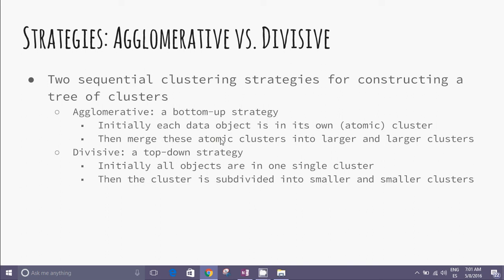Agglomerative is a bottom-up strategy. Initially each data object is in its own atomic cluster, then merge these atomic clusters into larger and larger clusters.